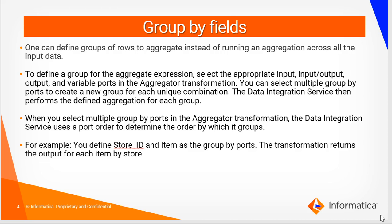Group by fields. One can define a group of rows to aggregate instead of running an aggregation across all the input data. To define a group for the aggregate expression, select the appropriate input, input-output, output, and variable ports in the aggregator transformation. You can select multiple group by ports to create a new group for each unique combination. The data integration service uses port order to determine the grouping order. For example, if you define store ID and item as the group by ports, the transformation will return the output for each item by store.